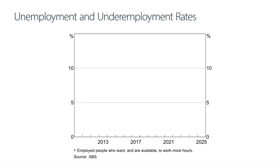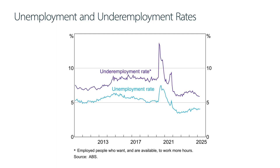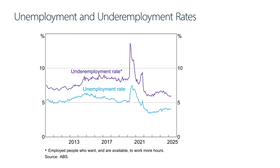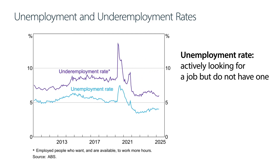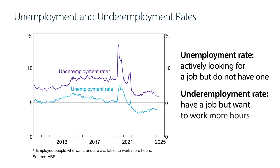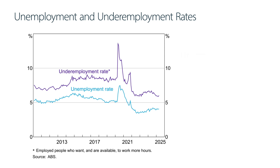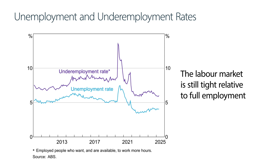Let's turn to the Australian economy, starting with the labour market. Labour market conditions have been steady in recent months. The unemployment rate is basically unchanged since mid-2024, and the underemployment rate has stabilised since the start of the year, after declining a bit last year. The unemployment rate tracks people who are actively looking for a job but don't have one. The underemployment rate tracks people who have a job but want to work more hours. Both measures are lower than their average levels over the past few decades, and the RBA continues to judge that the labour market is tight relative to full employment. A tight labour market means the demand for workers, or firms who want to hire, is strong relative to the supply of workers, or people who want a job.